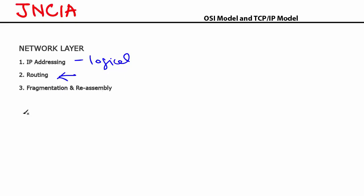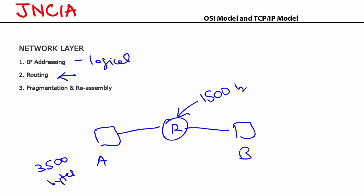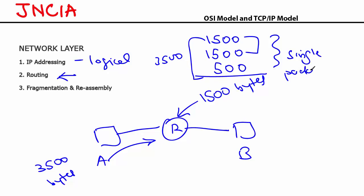Packets that are too large to be sent over the network need to be broken down into smaller pieces. For example, if host A has to send a packet of 3500 bytes but the router can only handle 1500 bytes at a time, the packet would be fragmented into two fragments of 1500 bytes and one fragment of 500 bytes. At the receiving end, all these fragments are put back together — that's reassembly. This important function is carried out at the network layer.